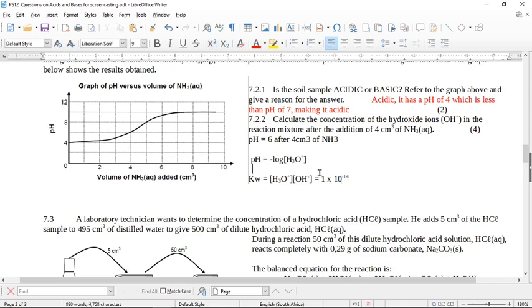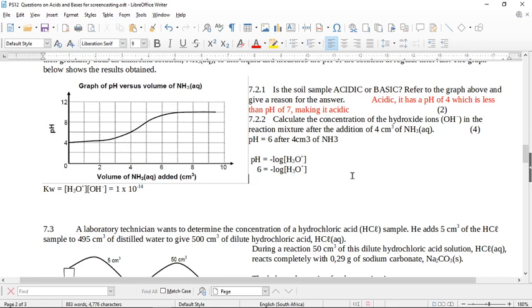So we're going to come back to this formula and we're going to say 6 equals this minus log the hydronium ion concentration. Okay, one mark for the formula, one mark for substituting. So then you will find that the hydronium ion concentration is going to be 1 times 10 to the power of negative 6. Okay, so we found the hydronium ion concentration, but it asked us for the hydroxide ion concentration, not the hydronium ion concentration.